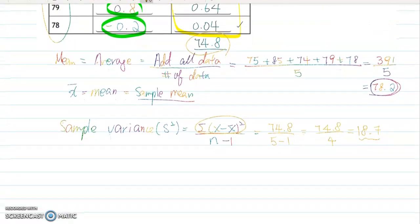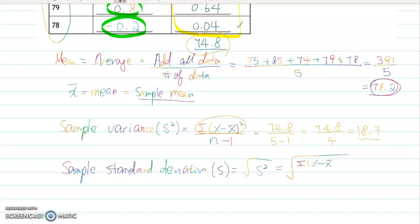Now the last step: sample standard deviation. The notation is s, which equals the square root of s squared - the square root of the sum of (x minus x̄) squared over n minus 1. We calculated this value already as 18.7, so calculate the square root of 18.7, which equals 4.32.